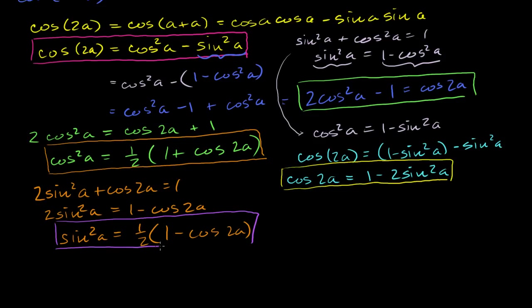It's always interesting to look at the symmetry here. Cosine squared and sine squared are identical in form, except you have plus cosine of 2a for the cosine squared power reduction, and minus cosine of 2a for the sine squared power reduction. So we've already found a lot of interesting things. Let's see if we can do anything for the sine of 2a.